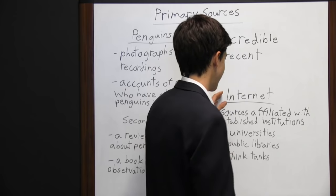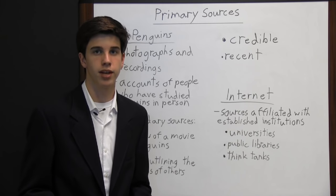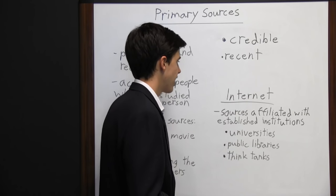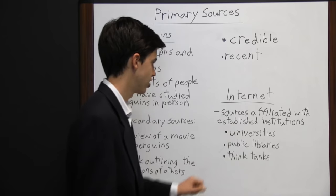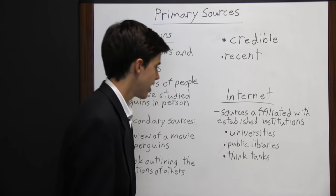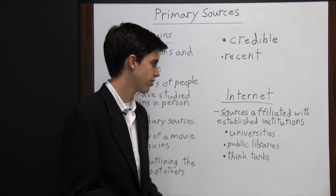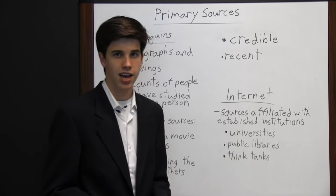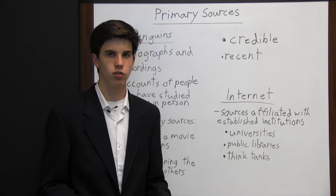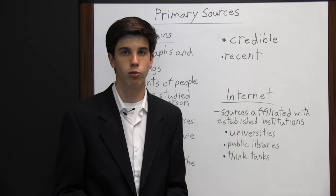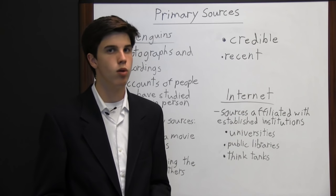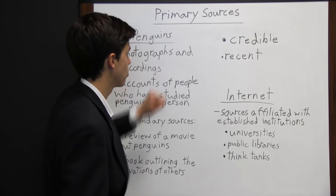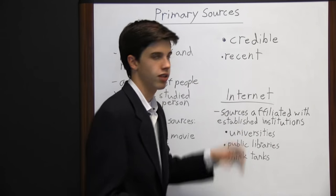A great place for primary sources is the internet. The best place is to look for sources affiliated with established institutions, such as universities, public libraries, and think tanks. If a website isn't affiliated with an established institution, see if established institutions link to it. Also look for information about the author of the webpage — many authors will include credentials, education, or experience, which increases credibility. Overall, when doing research, look for primary sources that are both credible and recent.